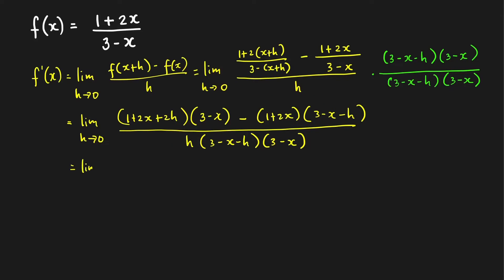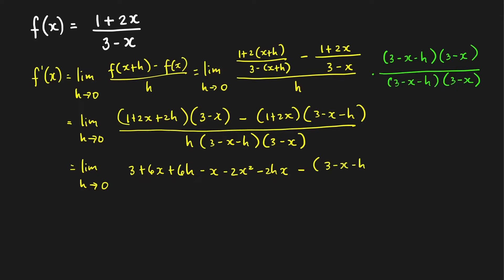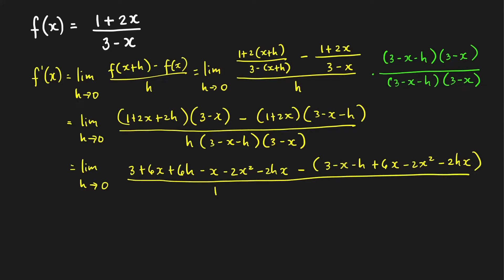When we expand the numerator, we get limit as h approaches 0 of: multiply by 3 and by negative x to get 3 plus 6x plus 6h, minus x, minus 2x squared, minus 2hx. Then multiply the second part — 1 times gives 3 minus x minus h, and 2x times gives plus 6x minus 2x squared minus 2hx — all over the denominator, h times 3 minus x minus h times 3 minus x.